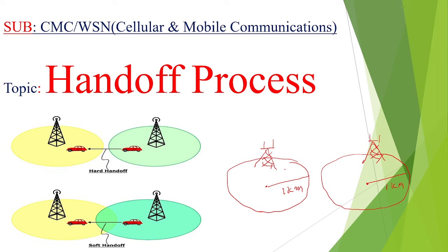The user is on a vehicle and is moving from one cell site to another. The call is initiated and he is talking while moving from the present cell site to the next cell site. When the user is out of the current cell site coverage area, the call will break because there is no coverage. The call may be interrupted, so that's the reason the handoff process is required.